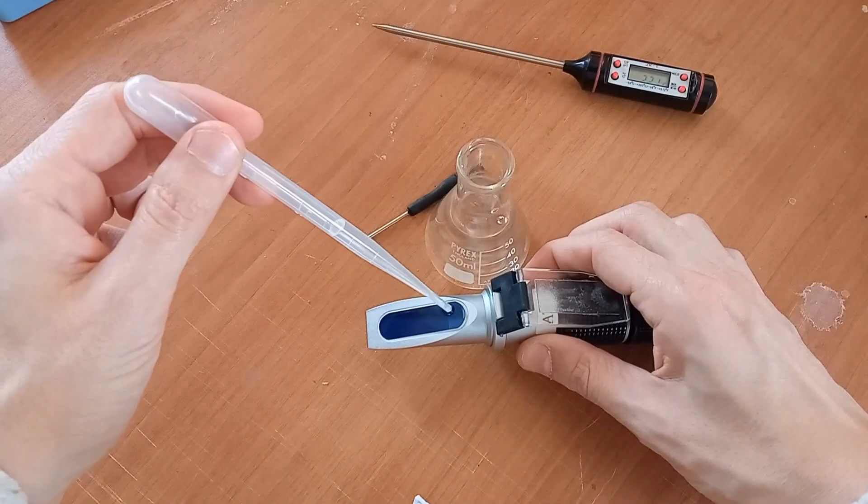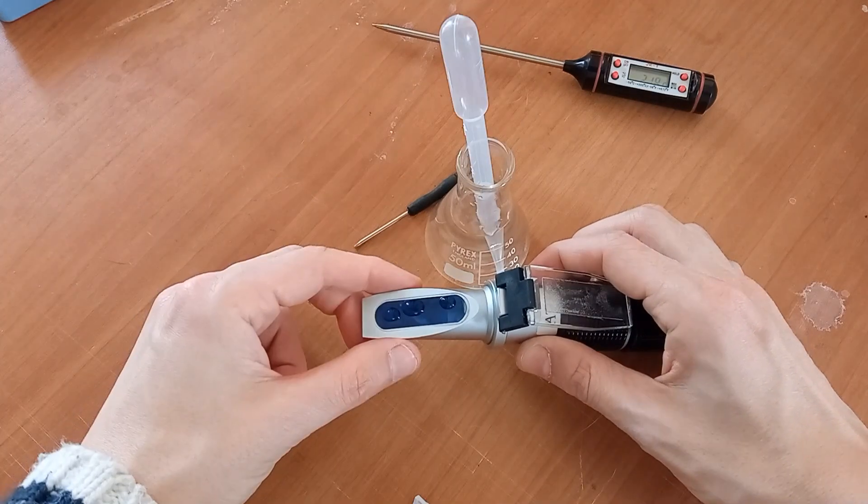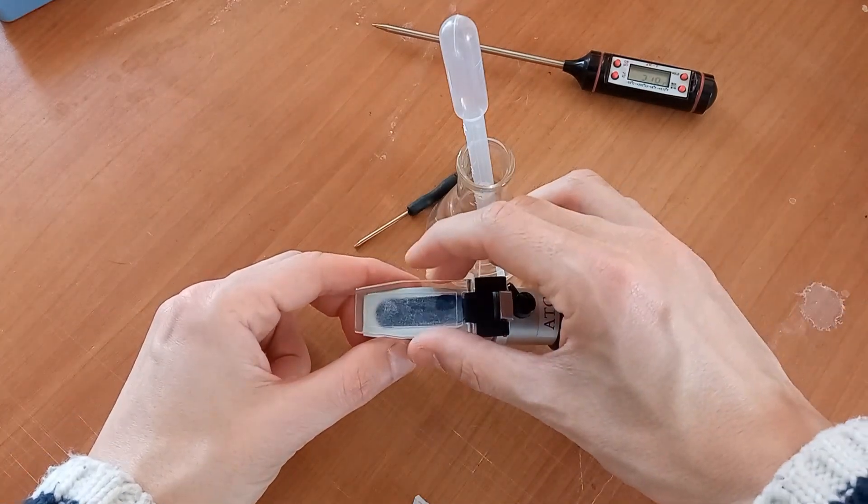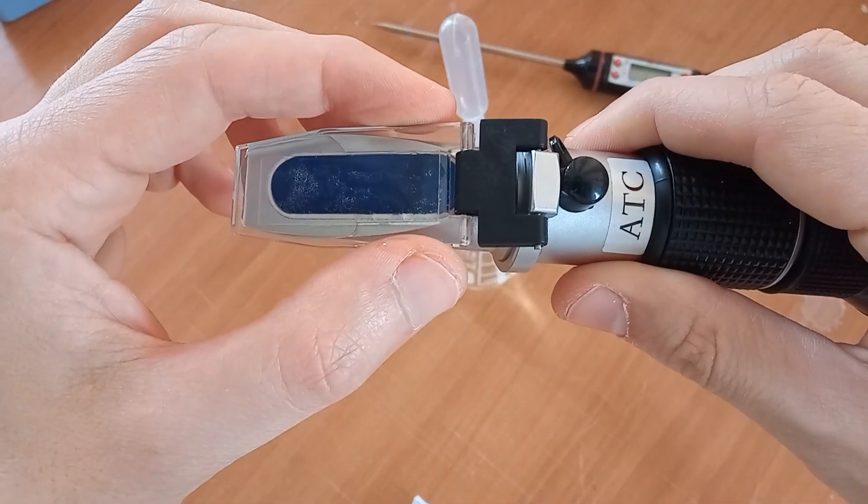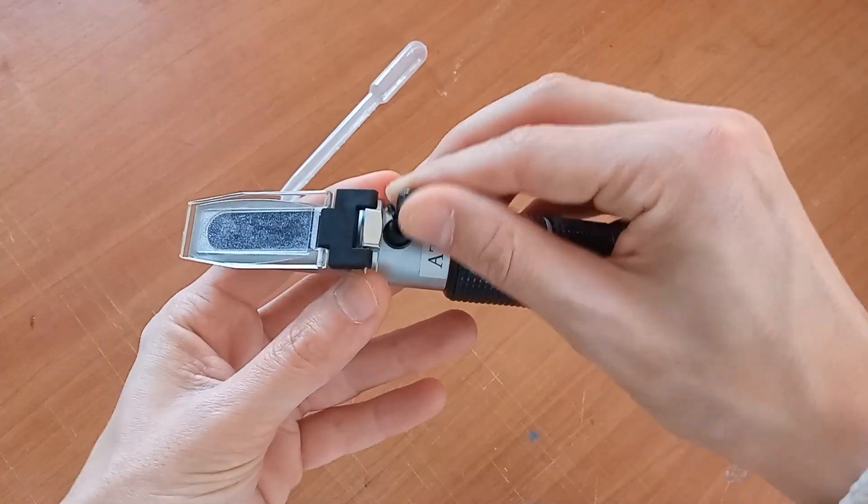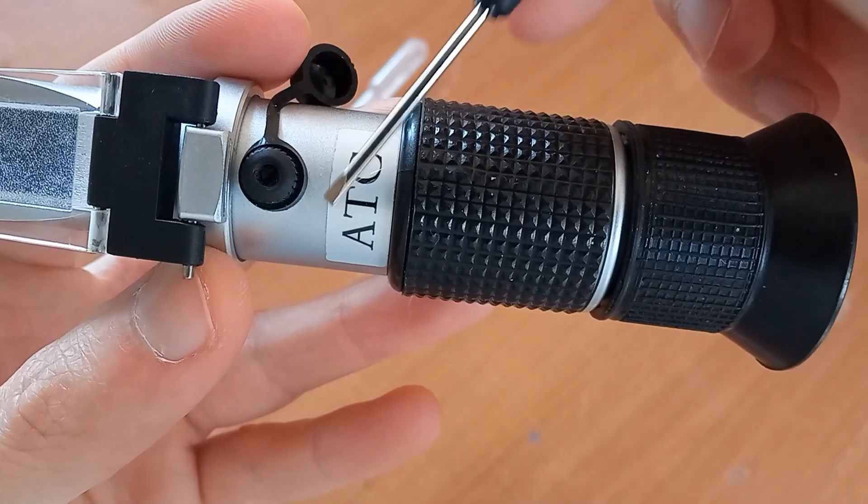Water at 20°C is dropped on prism. The cover applied. Care must be taken against bubbles. Instrument is then pointed towards daylight. With the screw, it is rotated until baseline is exactly on zero.